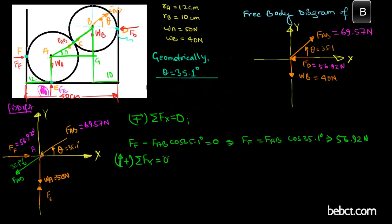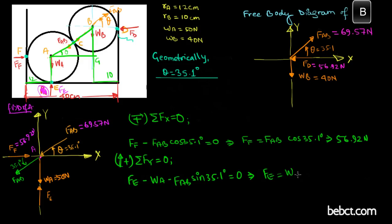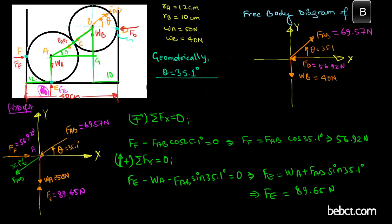Along the Y axis, taking the upward direction as positive and setting the sum of forces to zero: FE is positive, the weight of ball A is negative, and FAB sin 35.1 degrees is also negative. So FE equals weight of A plus FAB sin 35.1 degrees, giving FE equal to 89.65 Newtons.